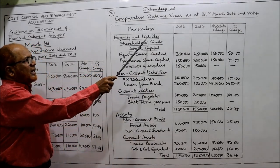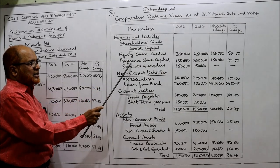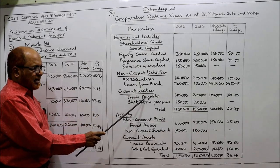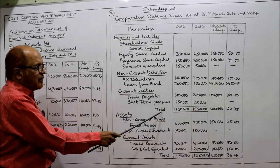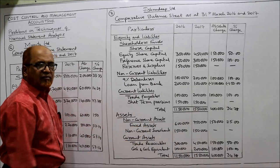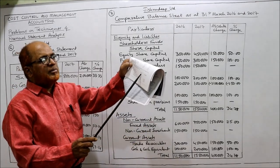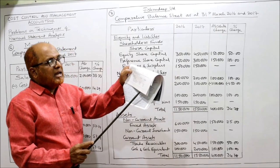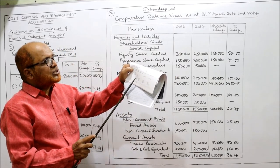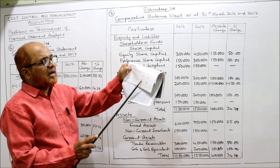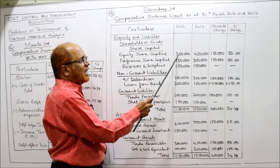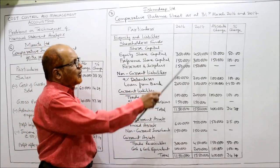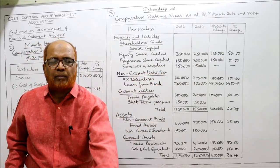Same format: Equity and Liability, Shareholders Fund, Share Capital, Equity Share Capital, Preferential Capital, Reserves and Surplus, Non-Current Liability, 9% Debentures, Loan from Bank, then Current Liability, Trade Payable, Short-Term Provisions. The total of the liability is 11,50,000 last year and 15,50,000 current year. Note that in the problem the first column is 2017 and second column is 2016, but we need first column 2016 and second column 2017. So carefully: Equity Share Capital last year 3 lakh, current year 4,50,000 — so last year 3 lakh, current year 4,50,000. Like this, copy down all the values for 2016 and 2017 as given in the problem.